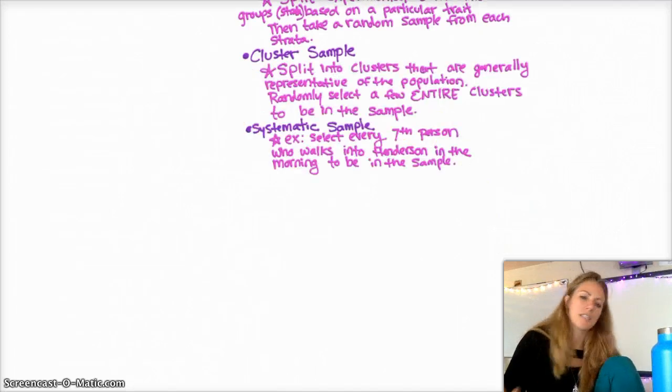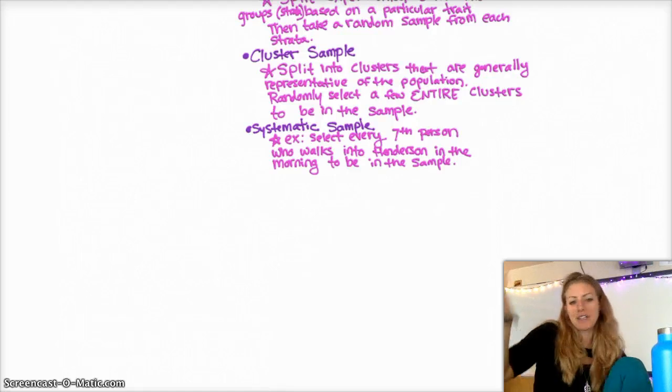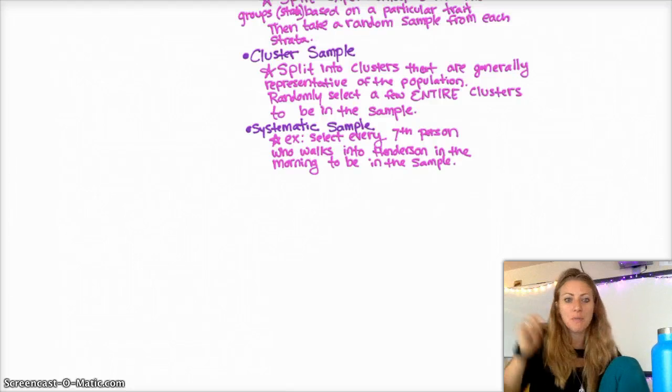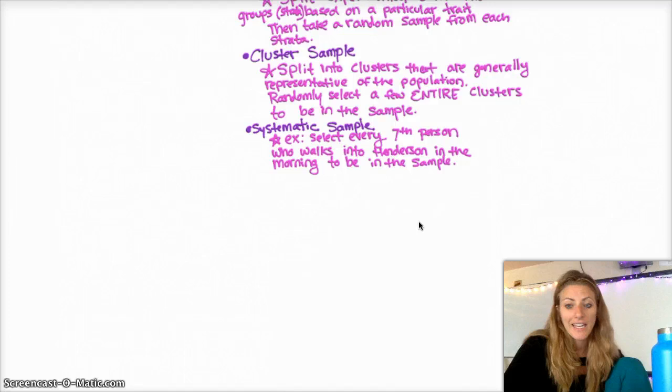And last but not least, we have the systematic sample. Actually, it is kind of late. We don't really use it very often. Basically, you select, for example, every seventh person who walks into Henderson in the morning to be in the sample. Typically, this number is randomly selected, but it's not used very often, but you should at least know the term. But typically, you'll see more of the stratified and simple random samples.